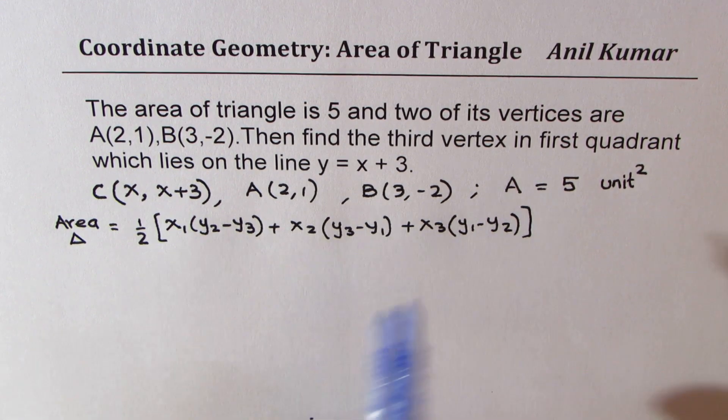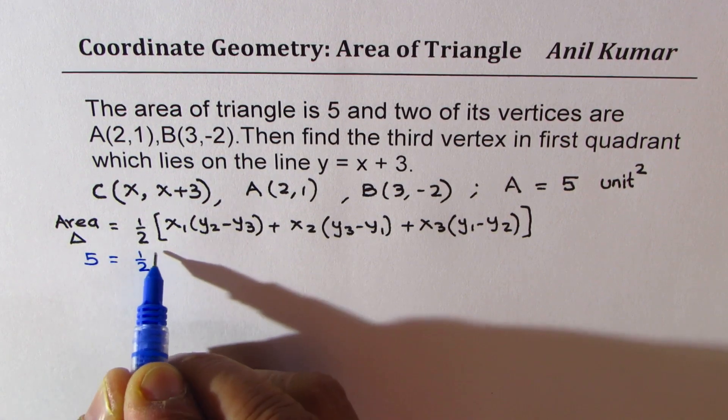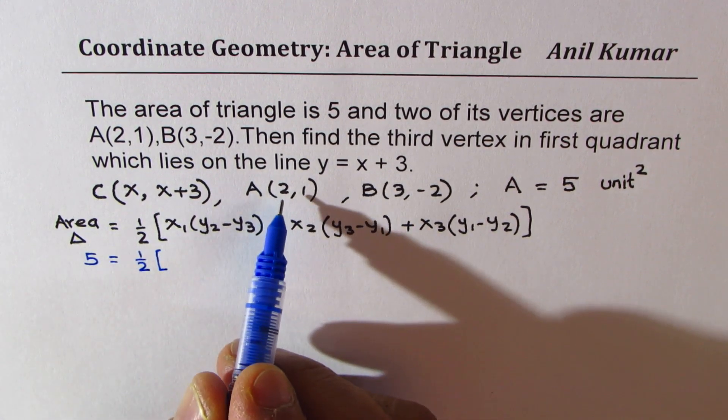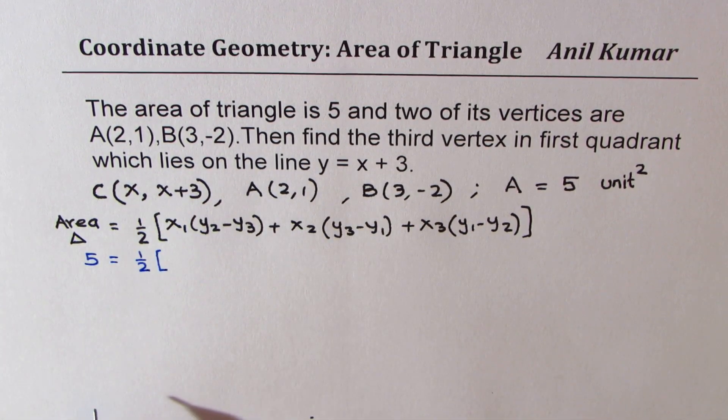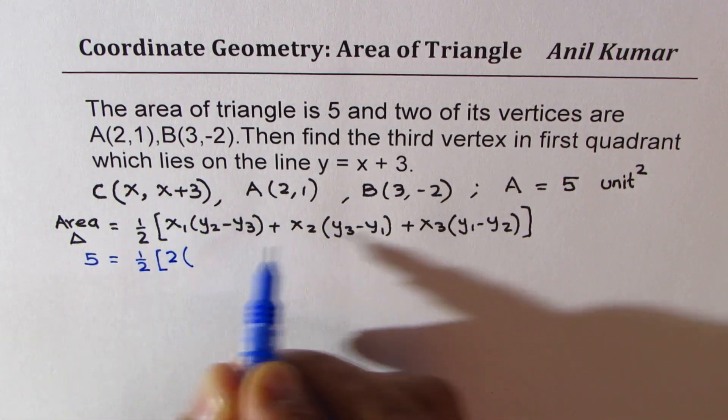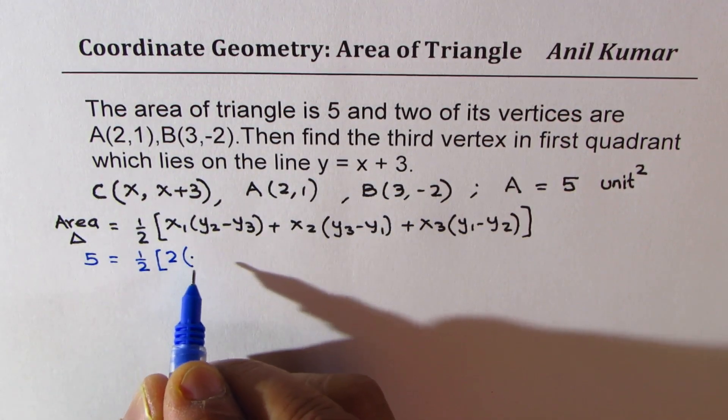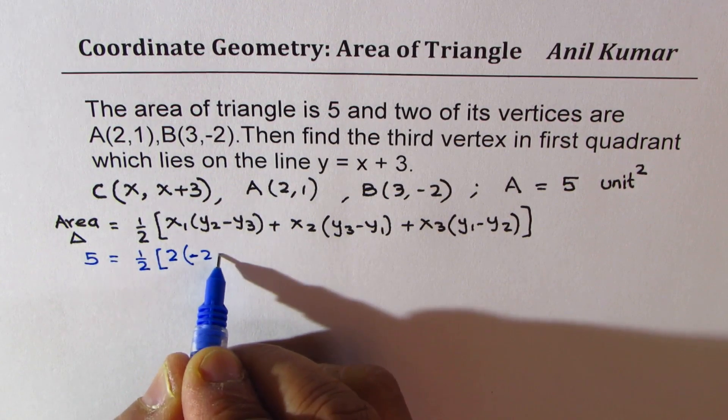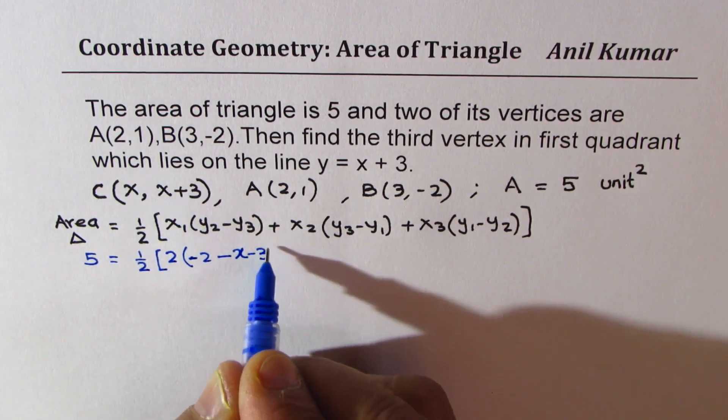So let's substitute 5 for the area which is given to us. Half of, let's take A as my first point, B as the second point, and C as the third point. So x₁ will be 2.